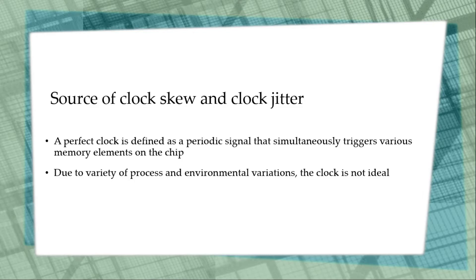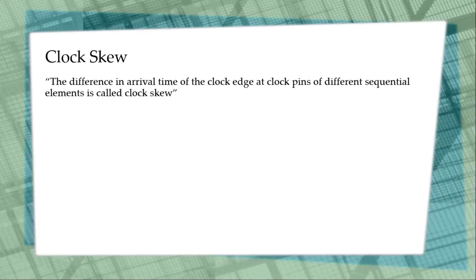In this video we are going to analyze the impact of spatial variations of the clock signal, called clock skew, and the temporal variation of the clock signal, which is also called clock jitter. Clock skew is defined as the difference in arrival time of the clock edge at the clock pins of different sequential elements.